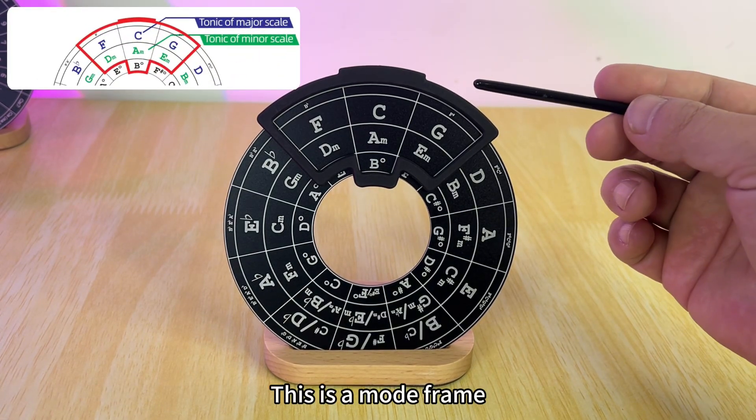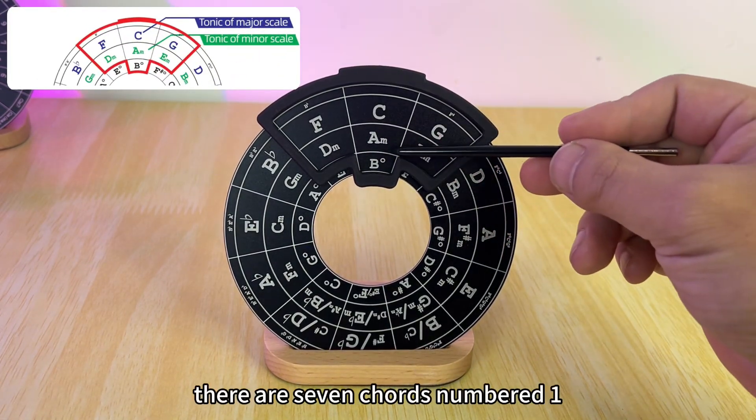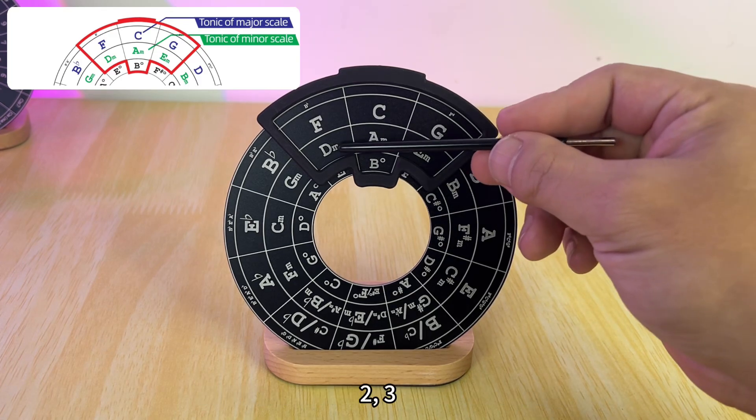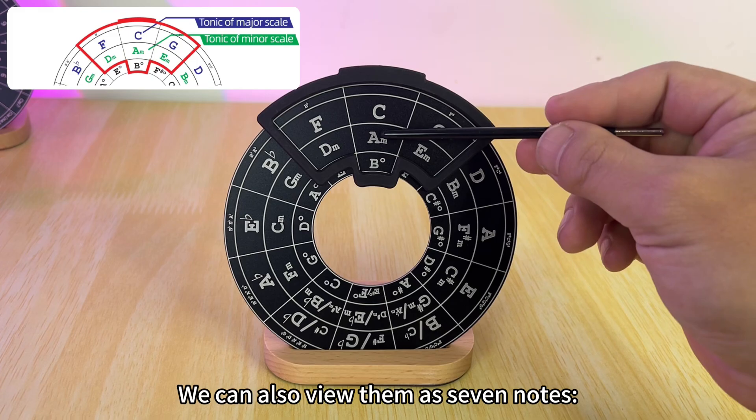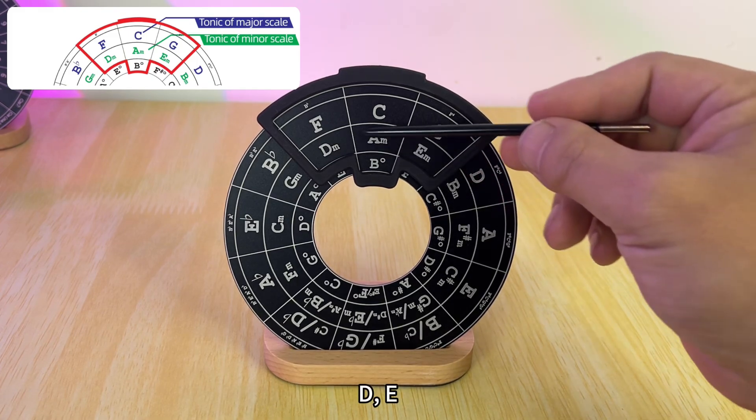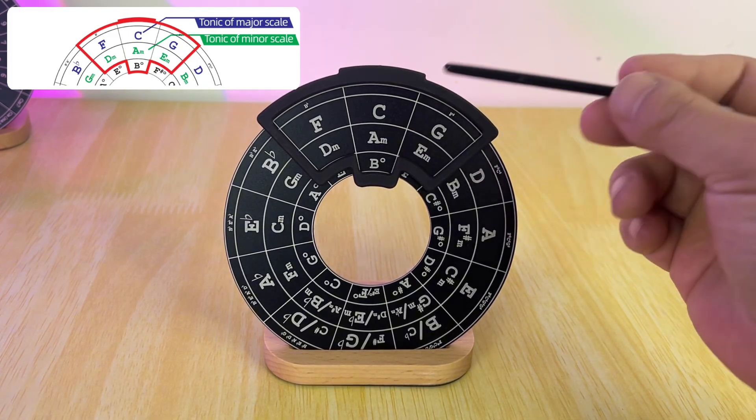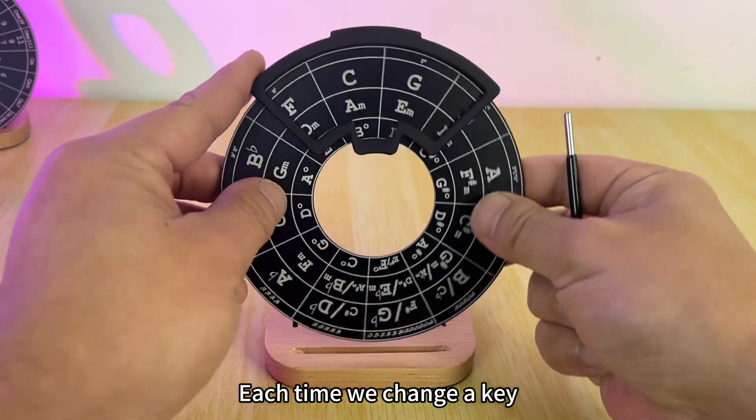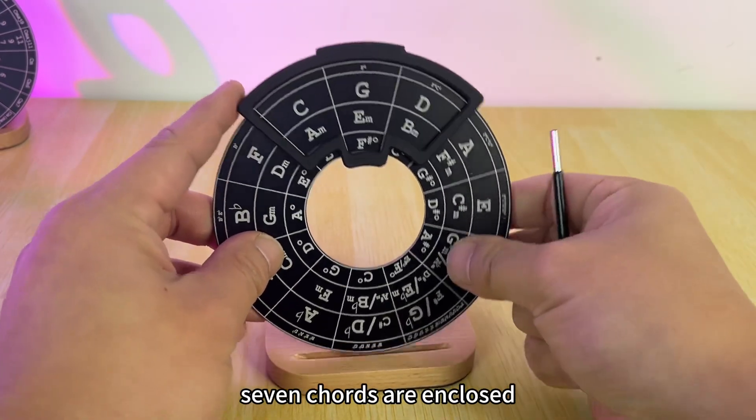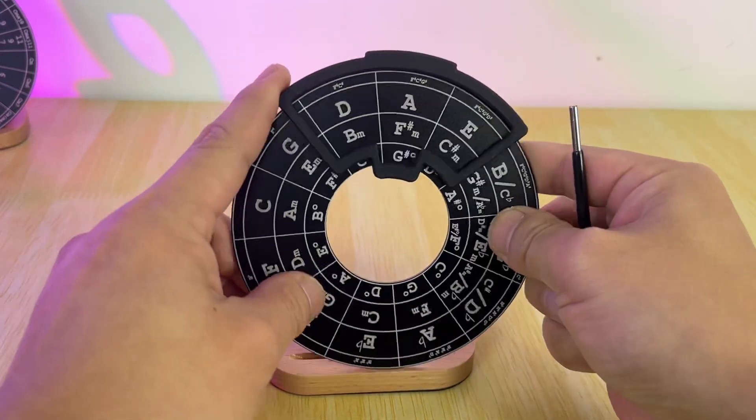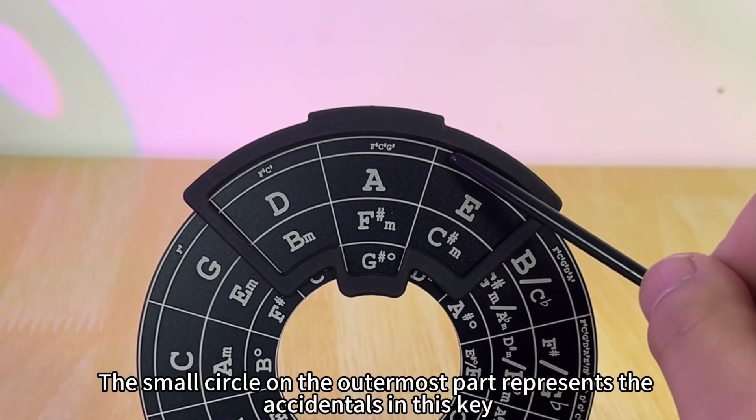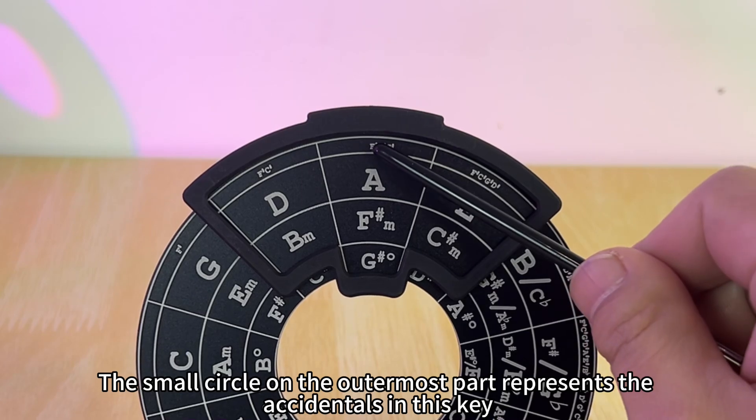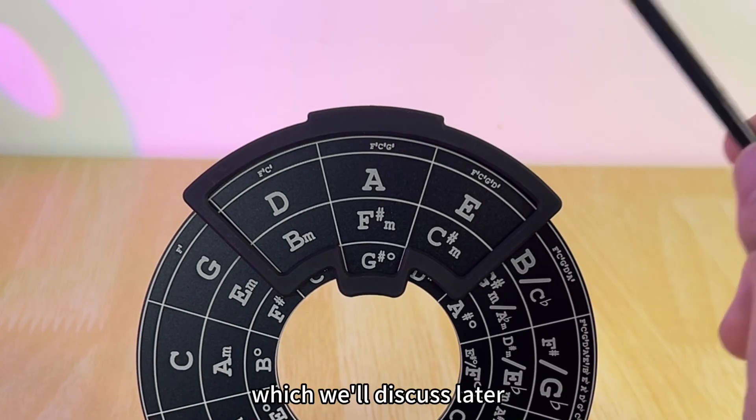This is a Mode Frame. Inside the Mode Frame, there are seven chords numbered 1, 2, 3, 4, 5, 6, 7. We can also view them as seven notes C, D, E, F, G, A, B. Each time we change a key, seven chords are enclosed. The small circle on the outermost part represents the accidentals in this key, which we'll discuss later.